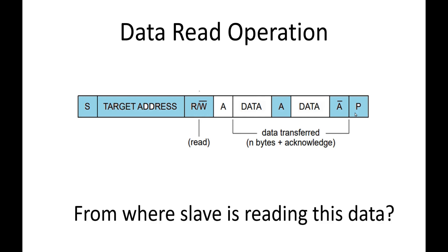Now my question for you is: from where is the slave reading this data? The slave can have multiple registers and multiple memories — it can be a big device. But nowhere has the master specified from where inside the slave it should read the data. If you know the answer, please write it down in the comment section, otherwise I will give the answer in the upcoming videos.